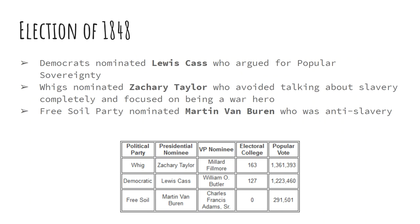The election of 1848: the Democratic Party nominates a guy named Louis Cass from Michigan. He's all about popular sovereignty — let the people choose their own adventure, so to speak. The Whig Party nominates Zachary Taylor. Zachary Taylor is a Southerner, but he tries to avoid talking about slavery at all. Everybody knows he's from the South, but Zachary Taylor says, 'Vote for me — I'm a war hero. I don't know anything about slavery.' The Free Soil Party nominates Martin Van Buren, who is of course anti-slavery.